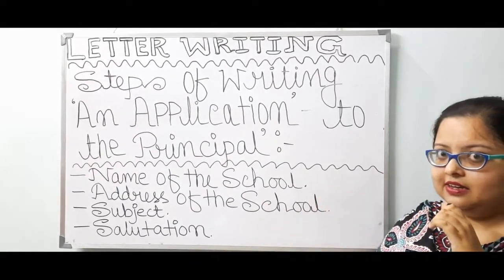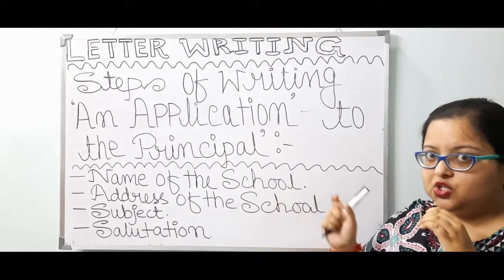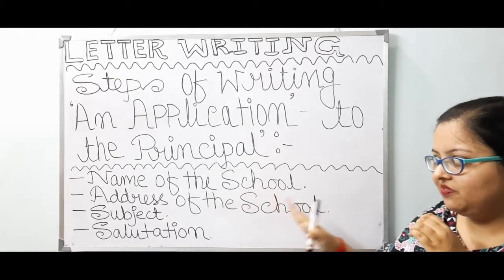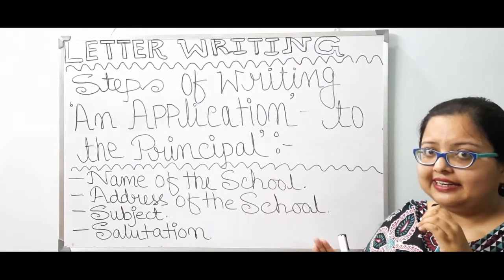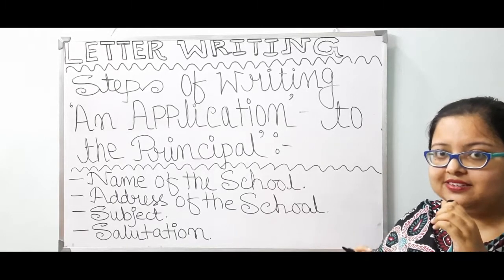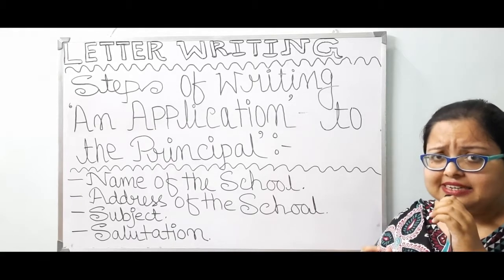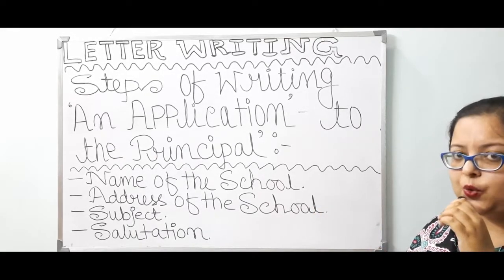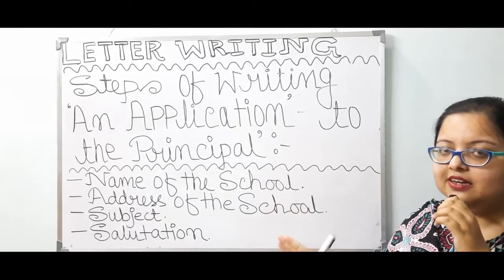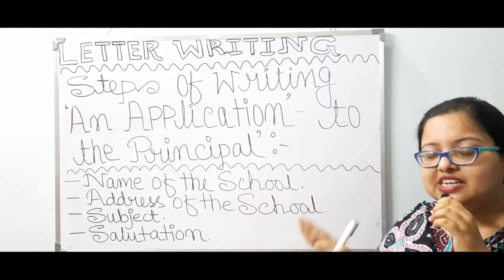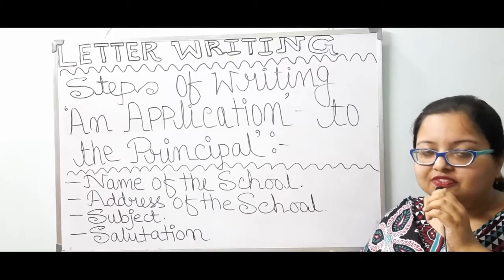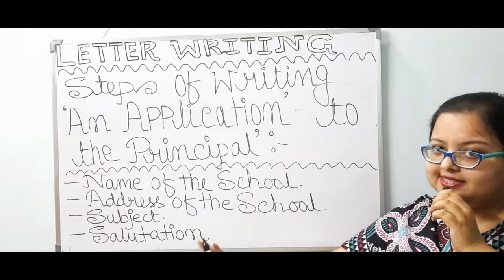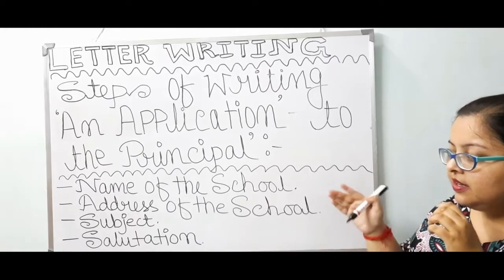Without leaving a line gap, write the name of the school — specifically mention the name of the school. On the next line, write the address of the school. Students, do not cross the middle of the line. If the address is long, continue on the next line. According to CBSE, always remember that everything in a letter must be started from the left-hand side, beside the left-hand side margin.